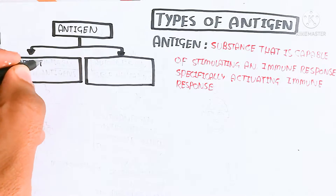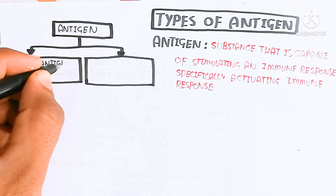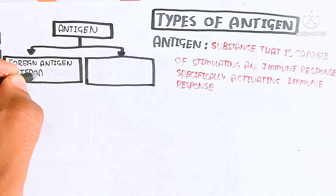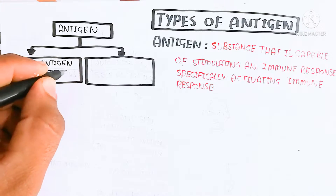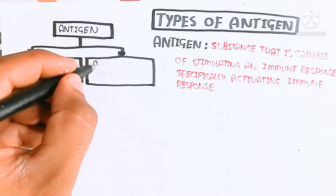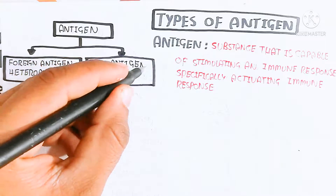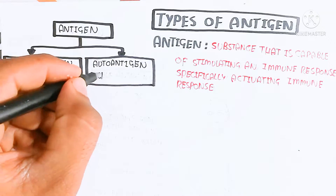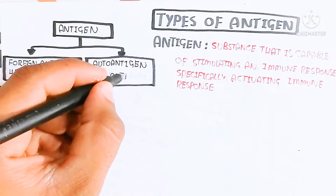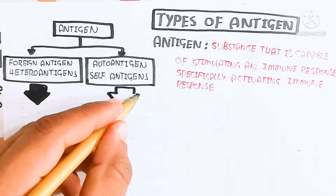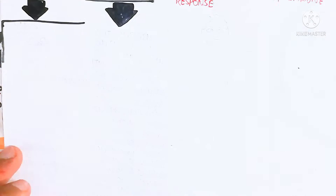The antigen can be of two types: foreign antigen, also known as hetero antigen, and auto antigen, which means self antigen — produced within the body itself.